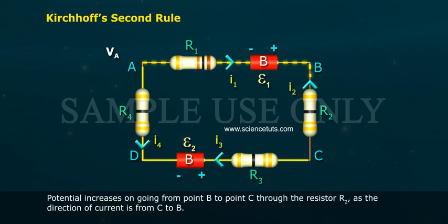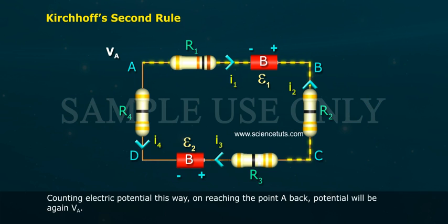Potential increases on going from point B to point C through the resistor R2 as the direction of current is from C to B. Counting electric potential this way, on reaching the point A back, potential will be again VA.